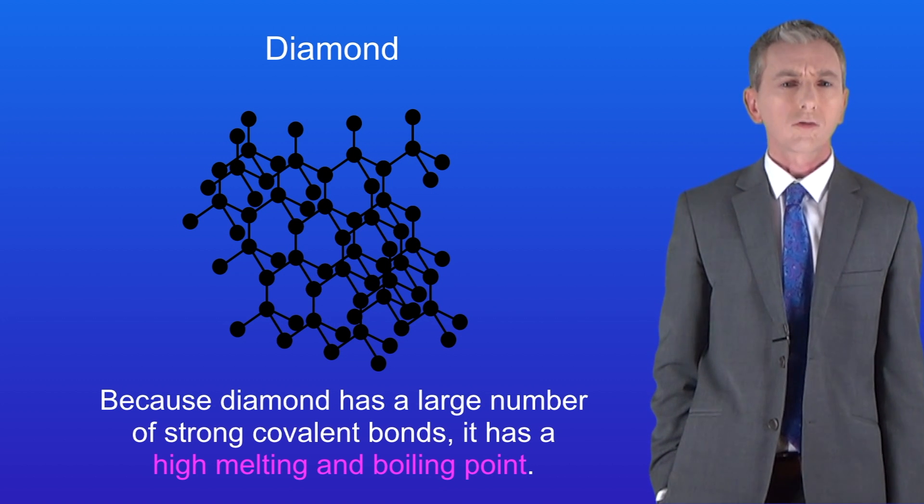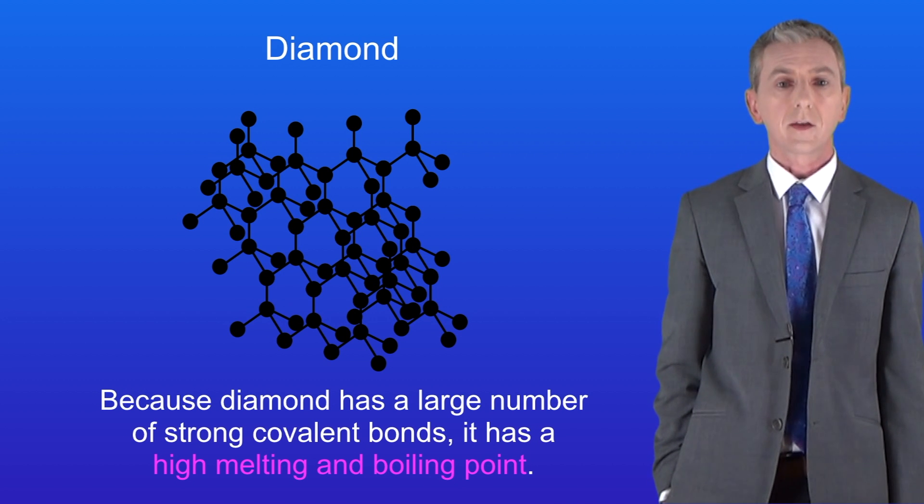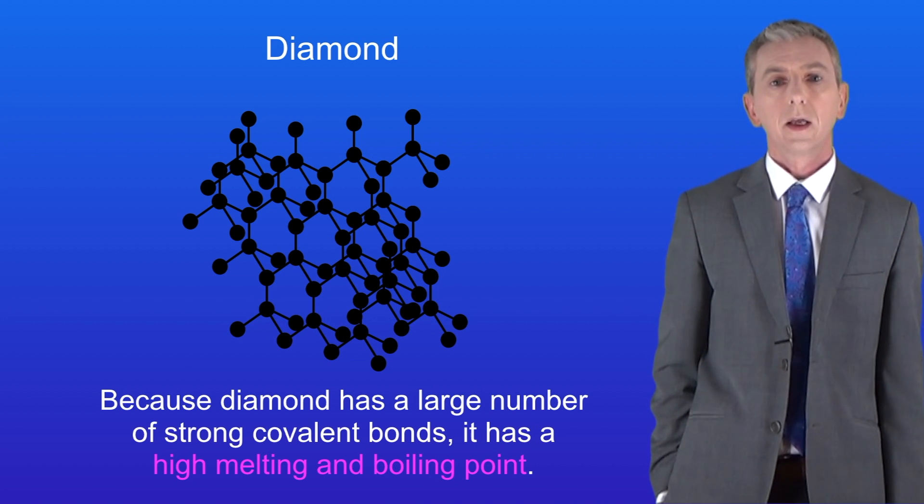In this video we're looking at graphite which is also a form of carbon. As you'll see graphite is very different from diamond. Let's start by looking at some of the key properties of graphite.